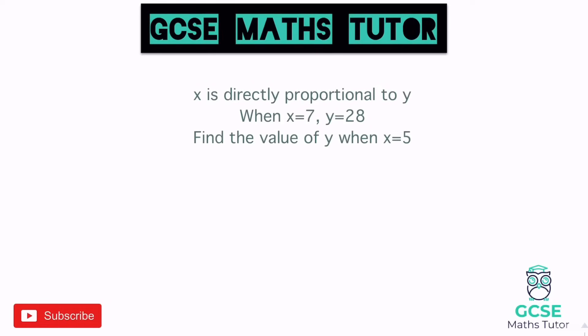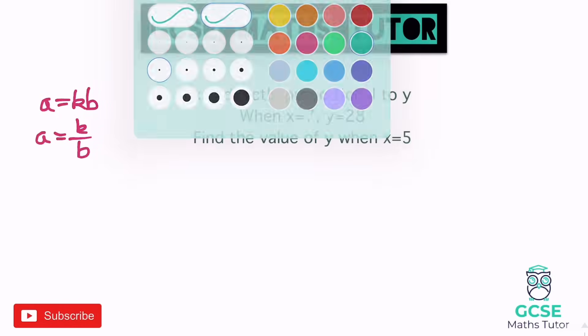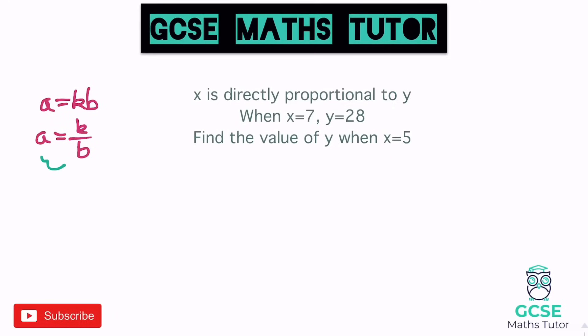In today's video we're going to have a look at direct and inverse proportion. We're going to start off with direct proportion, but there are really only two formulas you need to know: either a equals kb, or a equals k over b — depending on what the variable letters are.